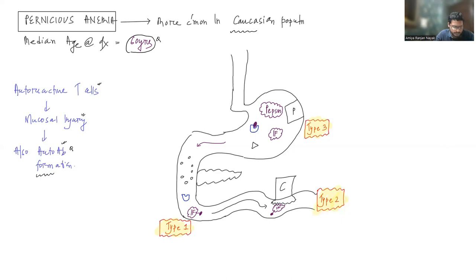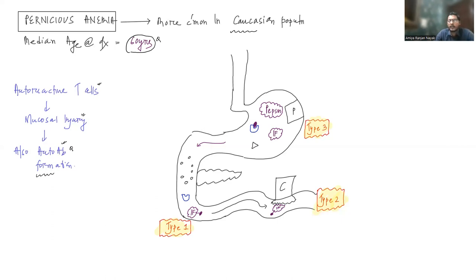You must be thinking about how these autoreactive T cells are getting generated. It is hypothesized that there are some genetic abnormalities that can lead to formation of these autoreactive T cells, but we do not exactly know what those genetic abnormalities are.